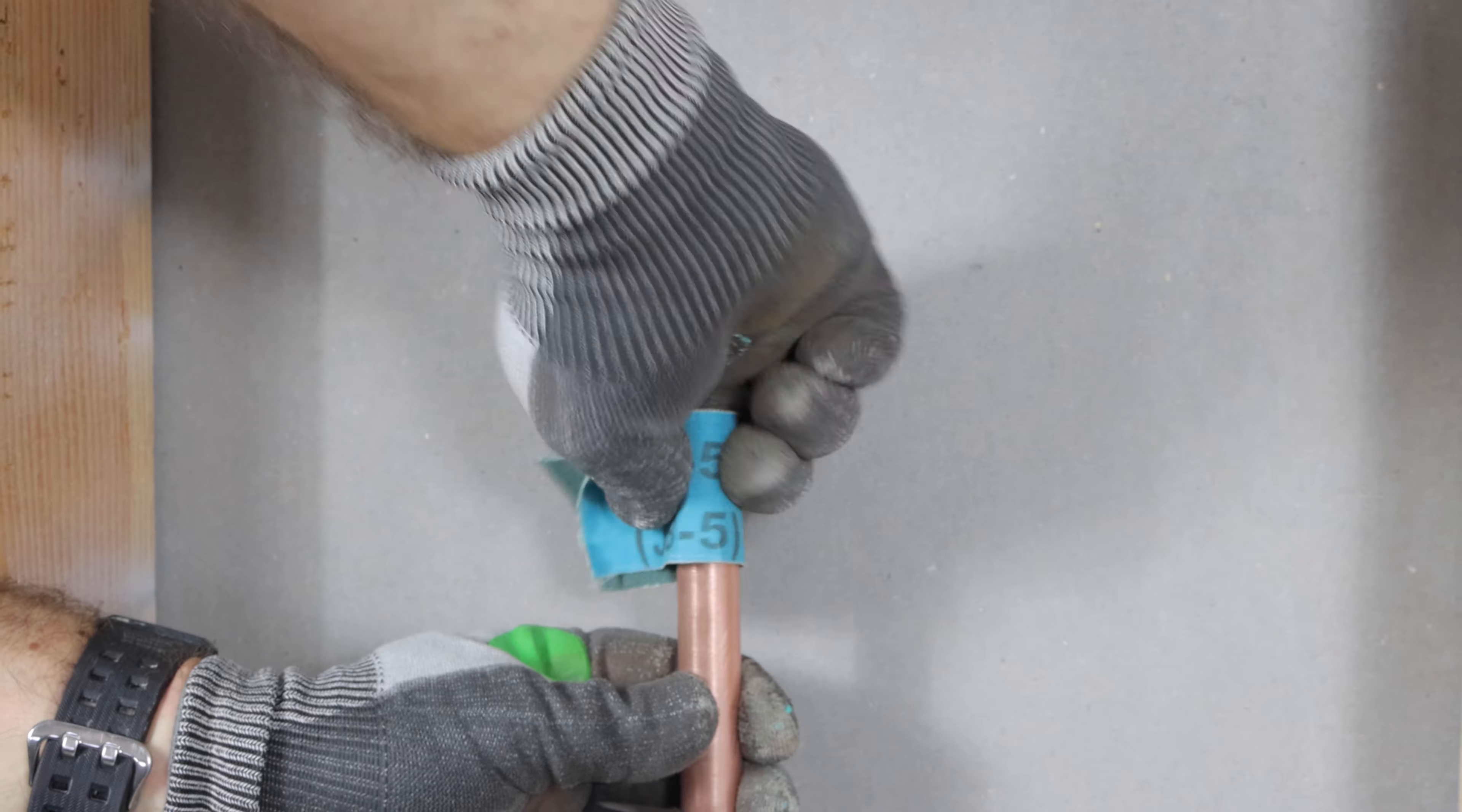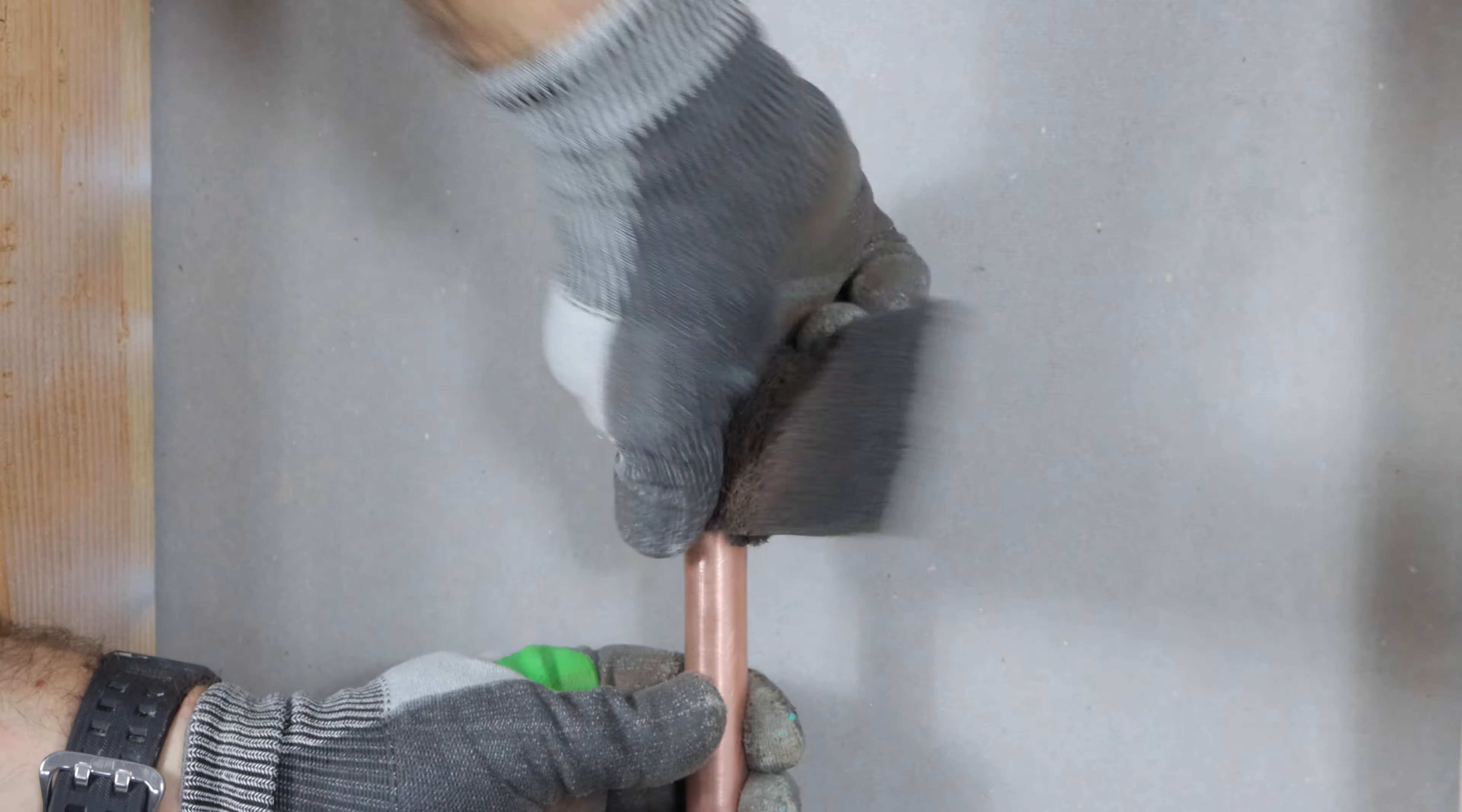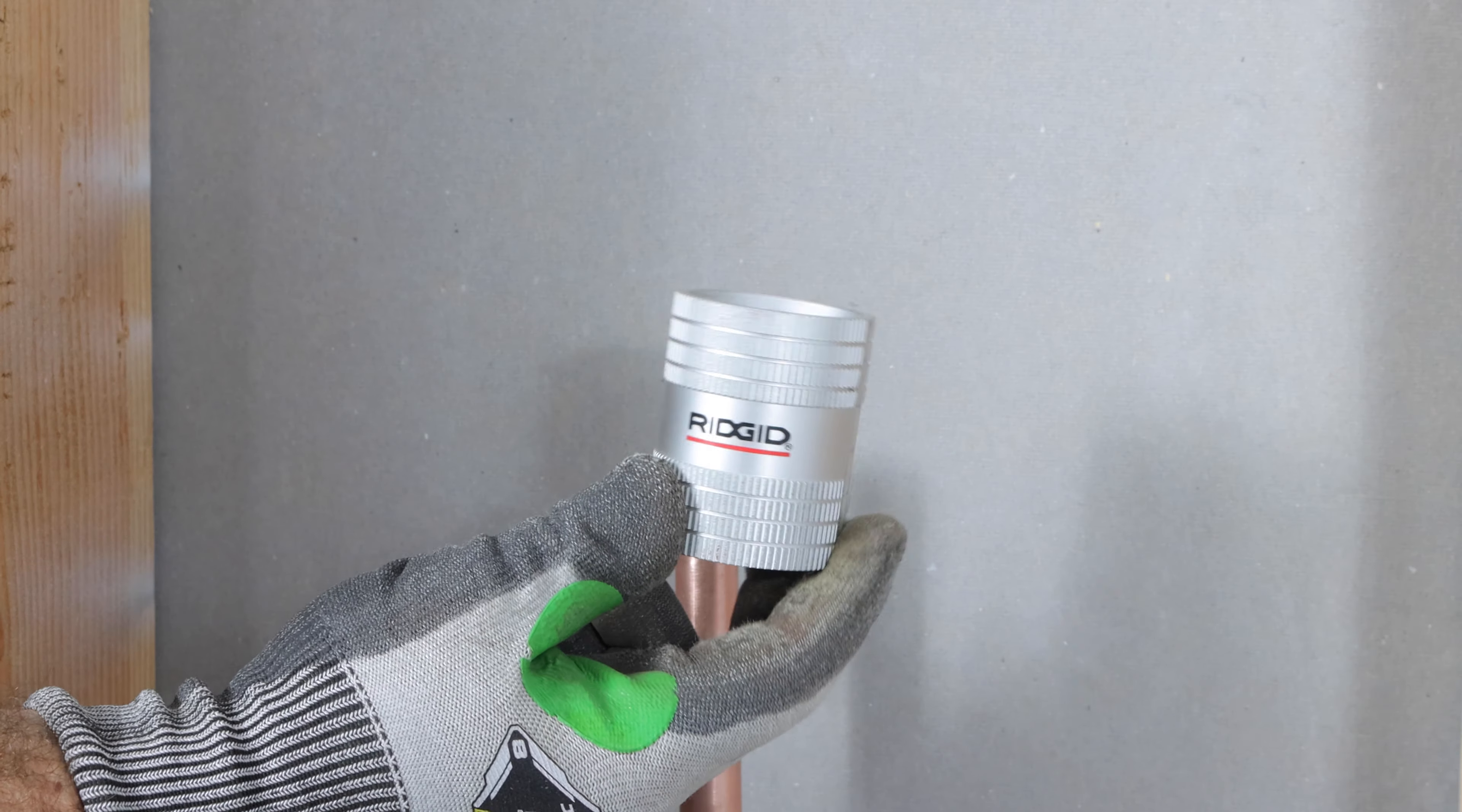First step is to use 120 grit emery cloth and clean the copper pipe. Then I use a nylon grit pad. This one is from Odie. This makes the copper pipe shine and really cleans it well.